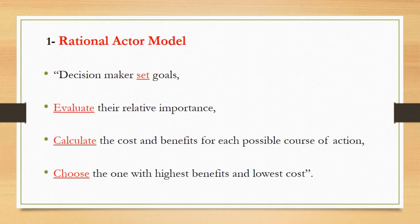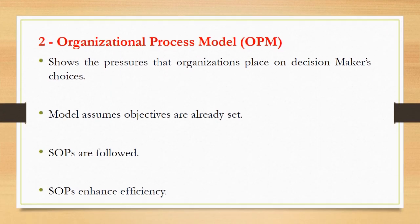The first model of foreign policy decision-making presented by Graham Allison is the Rational Actor Model. According to this model, a decision-maker first sets goals, then evaluates the relative importance of these goals. After evaluating their relative importance, he calculates the costs and benefits for each possible course of action, then chooses the one with the highest benefit and lowest cost.